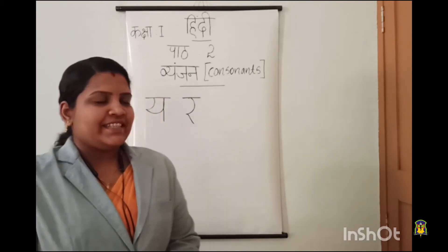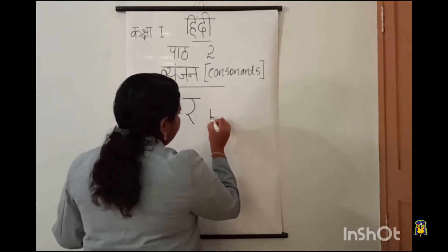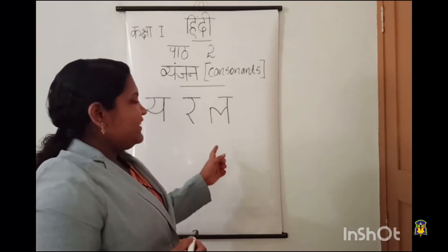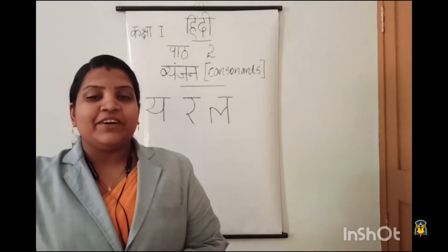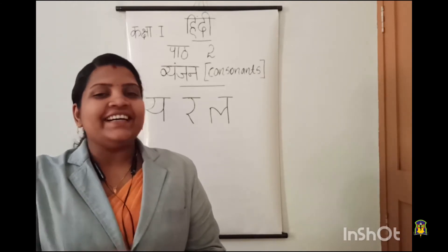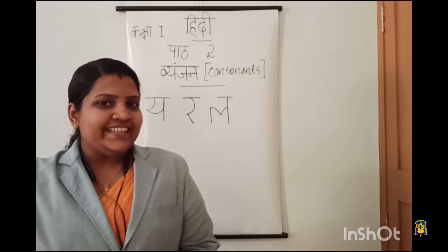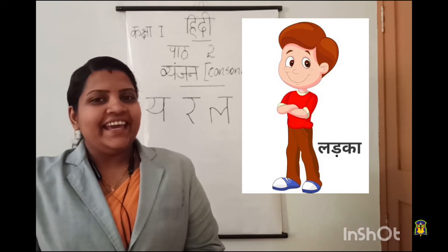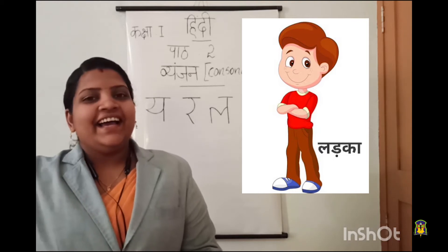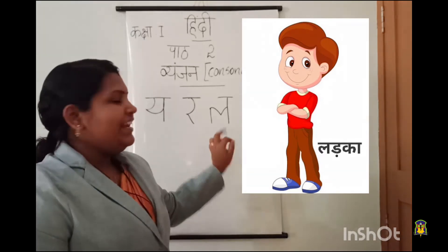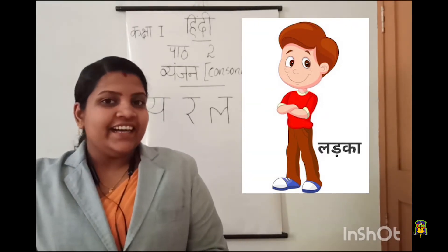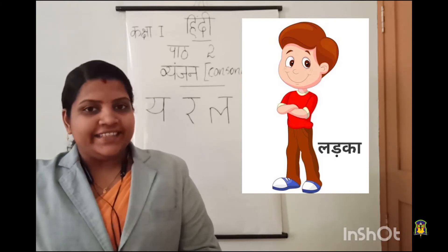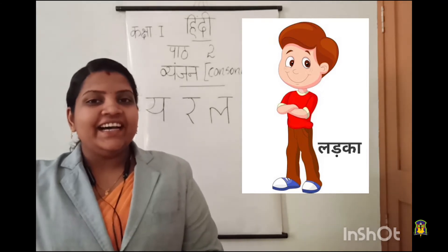Can we move on to the next one? So after ra, the coming letter is la. This is letter la — say louder: la. Then next we are going to learn a word starting with letter la. What is this? Yes, it is 'ladka'. Say louder: ladka. And the first letter of ladka? Yes, la. So la say ladka — ladka means boy. One more time: la say ladka, ladka means boy.